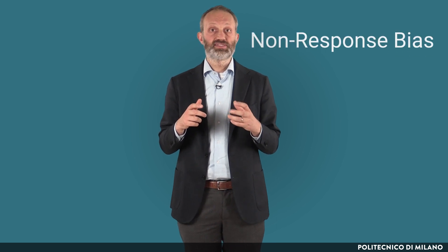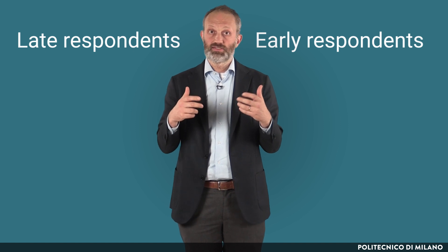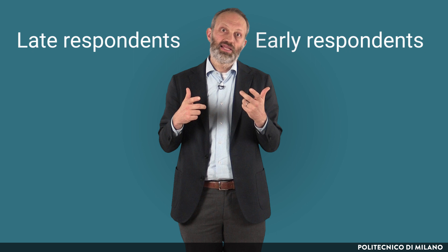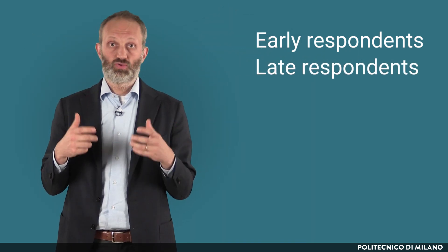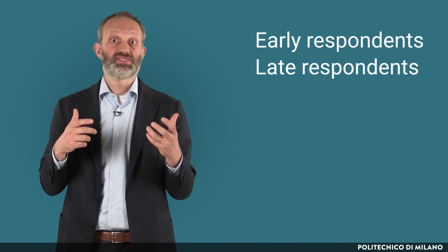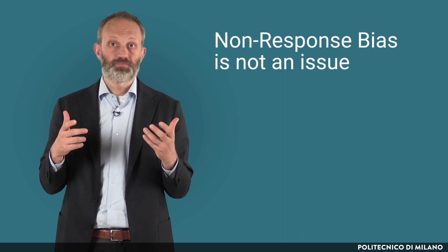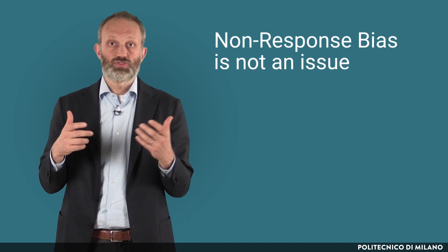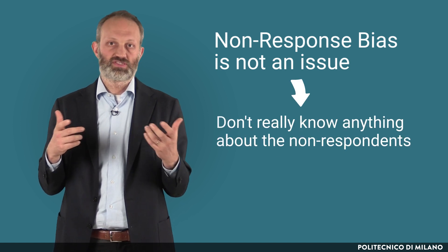Another way to check non-response bias is to split the sample in two, separating the early from the late respondents, assuming that late respondents — who maybe had to be solicited several times to reply — are more similar to non-respondents. If there are no significant differences between the answers of the two subsamples, we can assume that non-response bias is not an issue. This method also shows some limitations, since we don't really know anything about the non-respondents.